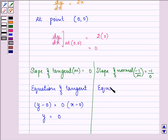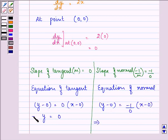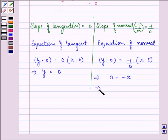Now equation of normal will be y minus y1 equal to slope of the normal times x minus x1, which gives us 0 equal to minus x, that further gives us x equal to 0.